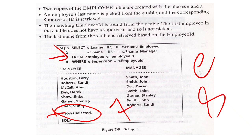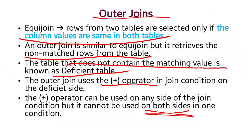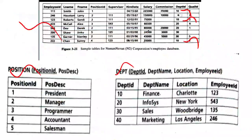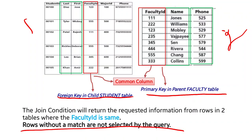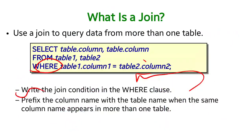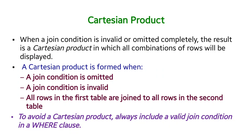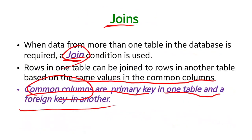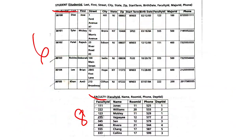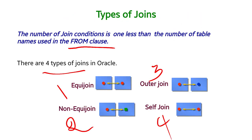Hope you understand what is meant by join. You are going to retrieve data from multiple tables — that is called a join. The join condition uses a common column — primary key in one table and foreign key in another. The types of join are equi join, outer join, non-equi join, and self join. Hope you understand.